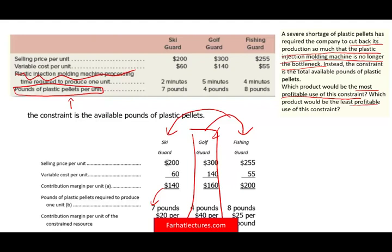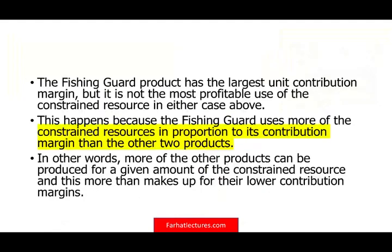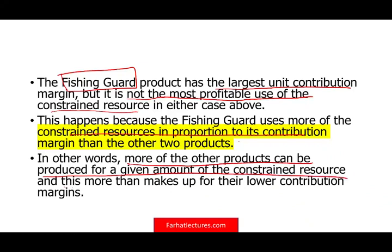This is how you use limited resources in your production facility. Notice the Fishing Guard had the highest contribution margin at $200 — yet we never chose it first. Why? It has the largest contribution margin, but it's not the most profitable use of the constraint resource. If we had unlimited resources, we should focus on producing and selling as many Fishing Guards as possible because it gives the highest margin. But our resources are limited, so we produce the highest contribution margin per constraint resource first — then the second level, then the third. If we run out of resources, we've made the most of what we had.